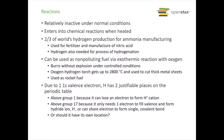Hydrogen has that single 1s valence electron, so there are two justifiable places on the periodic table for it. Generally you see it above group 1 because it can lose an electron and form the H+ cation, and its electron configuration is 1s. But it's a gas, not a metal. It can also be placed above group 17 because it only needs one electron to fill its valence, forming the hydride ion H minus, and it can share an electron to form a single covalent bond — it's a non-metal. Or maybe it should have its own location, and that is our discussion topic for this week.